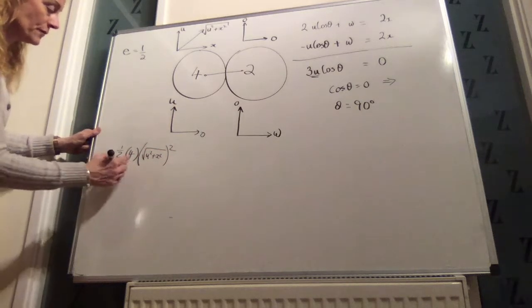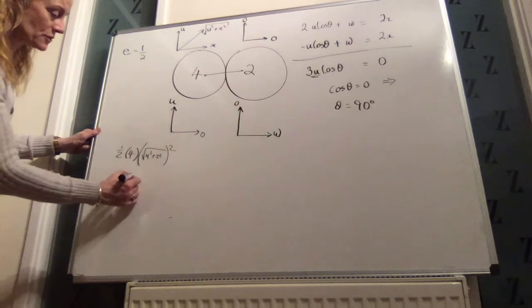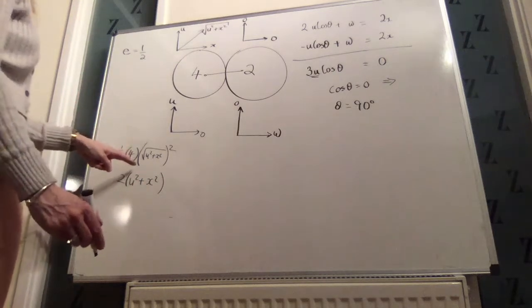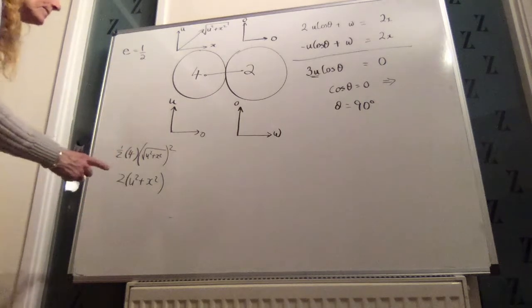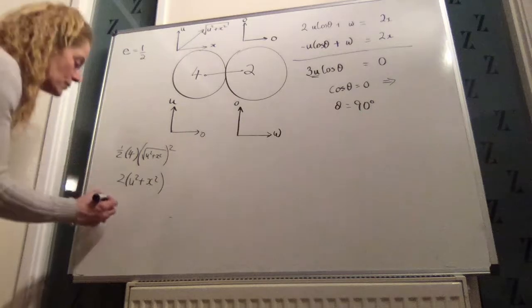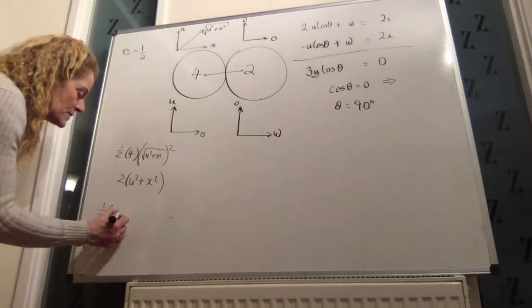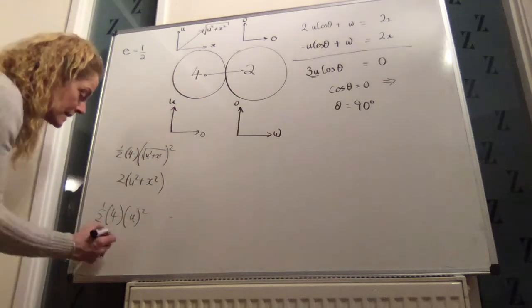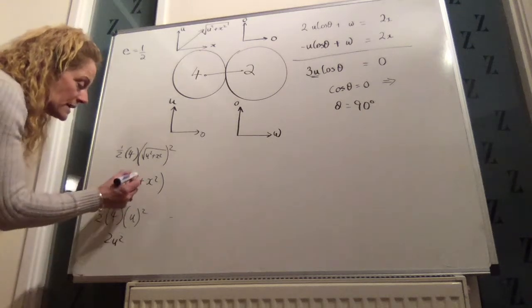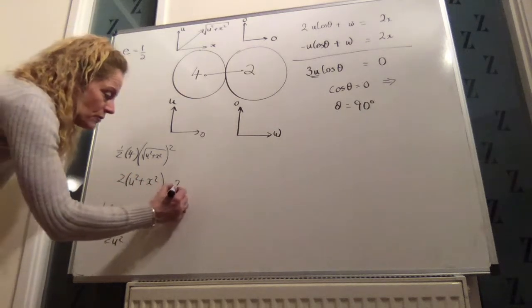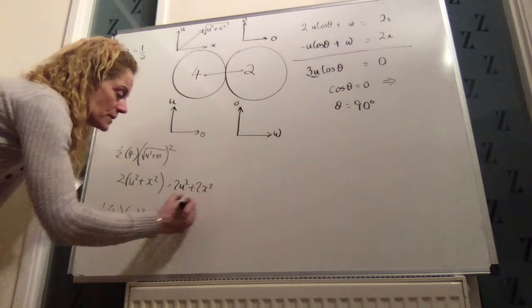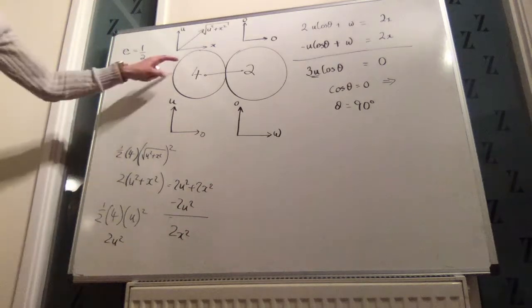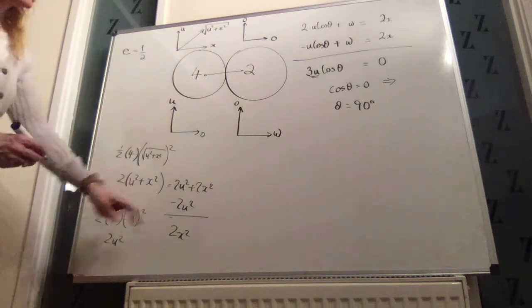That gives you a half of 4 is 2, and the square root of a number squared is just the number itself. That's the kinetic energy afterwards. The kinetic energy beforehand is a half times 4 times its velocity squared. So, its velocity is u in that situation. That's 2u squared. So, the kinetic energy after, take away the kinetic energy before, is 2u squared plus 2x squared minus 2u squared. So, it is 2x squared. That's the gain in kinetic energy for this one, 2x squared.